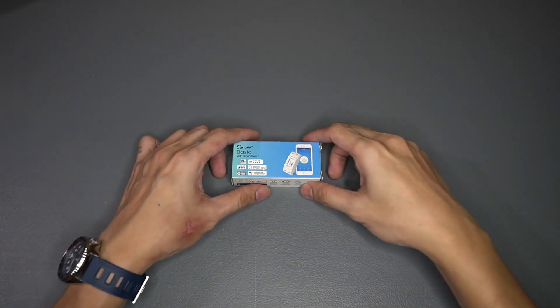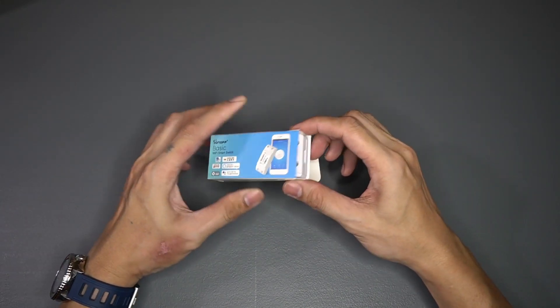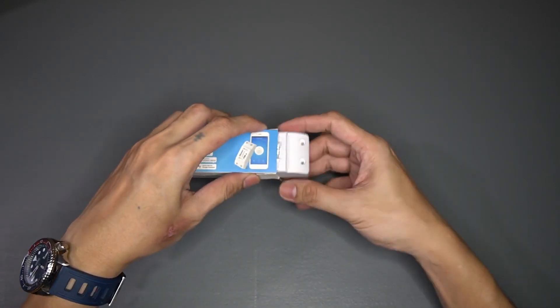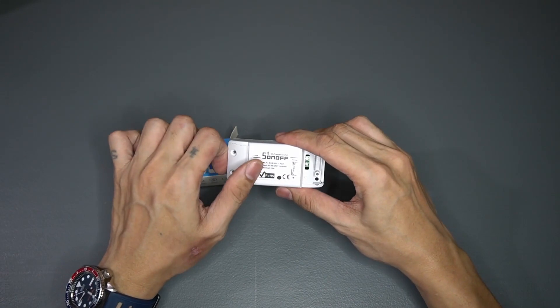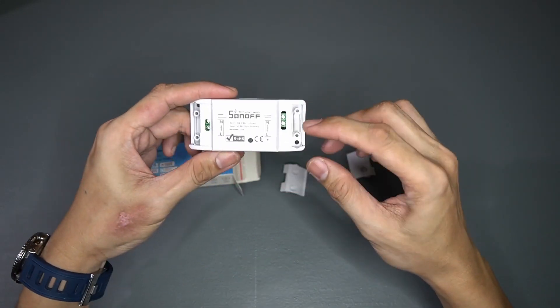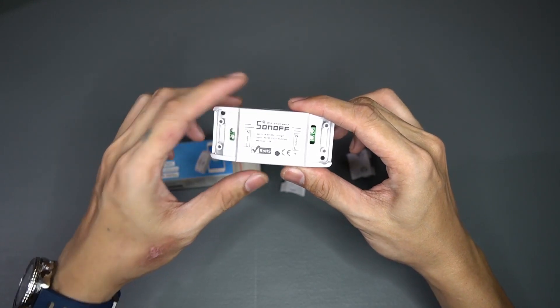The unit came in this small box. Opening the box, inside we have the unit itself. On both sides of the unit, you'll see the terminals for connection. On the right side, you have the output terminal, and on the left side, you have the input terminal.